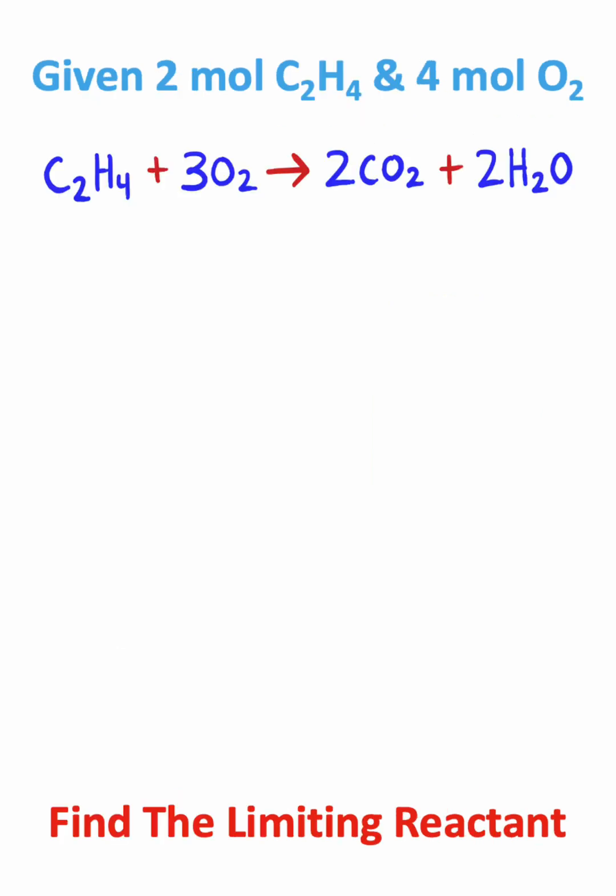In this problem, we are given a balanced chemical equation, and we're asked to identify the limiting reactant. Now the way you can identify the limiting reactant is to find the moles per coefficient ratio for each of the reactants.